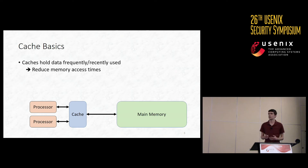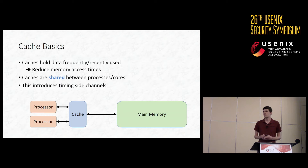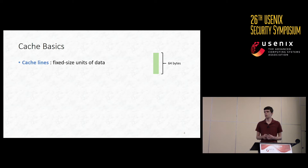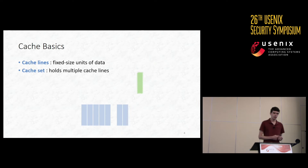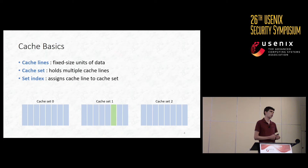Let's back up a bit and talk about caches themselves. Caches in modern processors hold data that is frequently or recently used, with the goal of reducing memory access times for that data on subsequent references. However, caches are shared between processes, and some caches are even shared between cores, which introduces timing side channels because any given process can observe differences in its memory access times depending on what other processes have done in the recent past — specifically what data they've accessed. Caches are made up of cache lines, which are fixed-size units of data. In recent Intel processors, a cache line is 64 bytes of data. Cache lines are stored in cache sets, each of which can hold multiple cache lines, and every cache line is assigned to exactly one specific cache set using something called its set index, which is typically a subset of its address bits. In our example, our cache line's set index indicates that it must go in cache set 1.